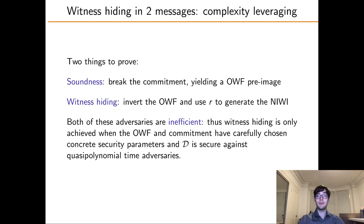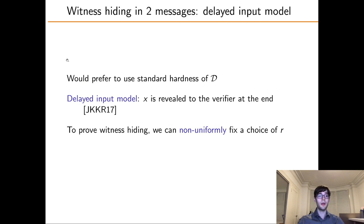For witness hiding, we invert the one-way function using brute force and use the pre-image R to generate the NIWI in the second step. By NIWI security, the malicious verifier still outputs a witness, thus breaking the D-search problem. Both of these adversaries are inefficient, so witness hiding requires the one-way function and commitment scheme to have carefully chosen concrete security parameters, and the distribution D must be secure against quasi-polynomial adversaries. We would much prefer to allow standard hardness of D — to achieve this, we give an alternate proof in the delayed input model, but we delay that discussion to the paper.